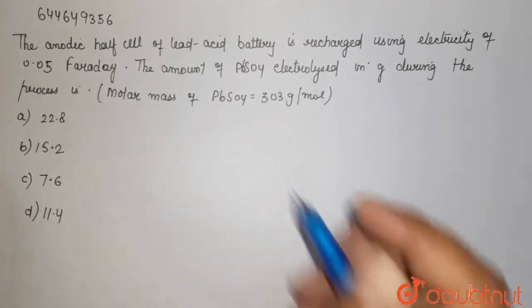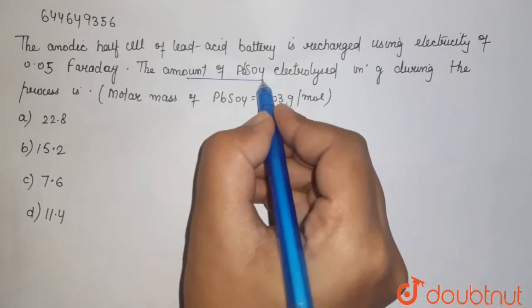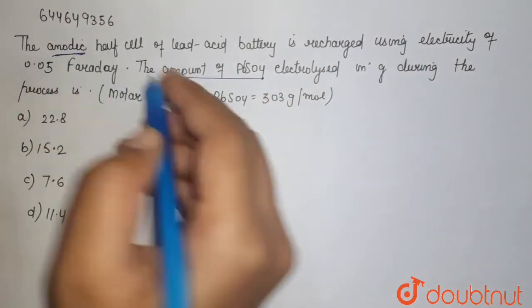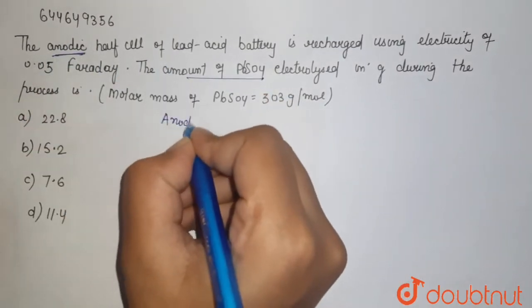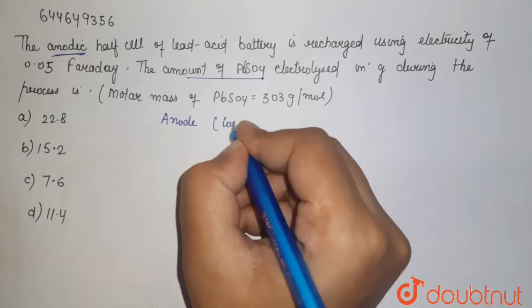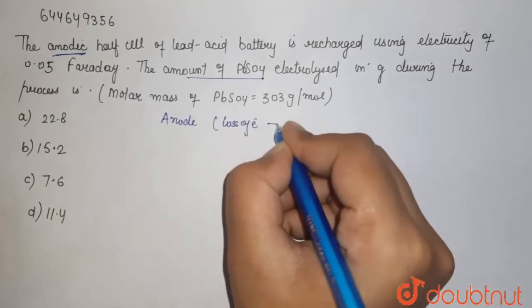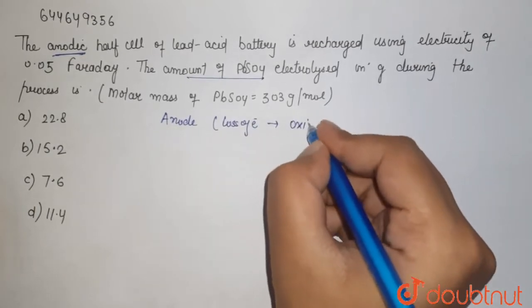Here we have talked about anodic, that means this is the anode compartment where loss of electrons is taking place, and that process of losing electrons is known as the oxidation process.